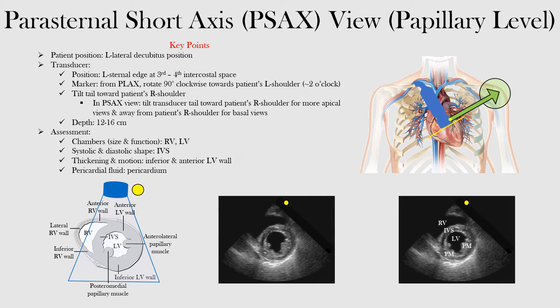In the previous lectures, we looked at the parasternal short axis view, and remember there are multiple levels. We looked at the aortic valve level, the mitral valve level, and now we're going to look at the papillary muscle level. So we're becoming more apical, more towards the apex of the heart. And what we want to do here, let's just review how do we get to the parasternal short axis view?